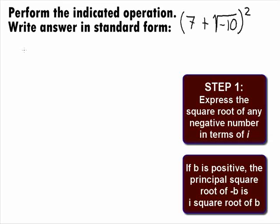So, we can rewrite the square root of negative 10 as i square root of 10. This will give us 7 plus i square root of 10 quantity squared.